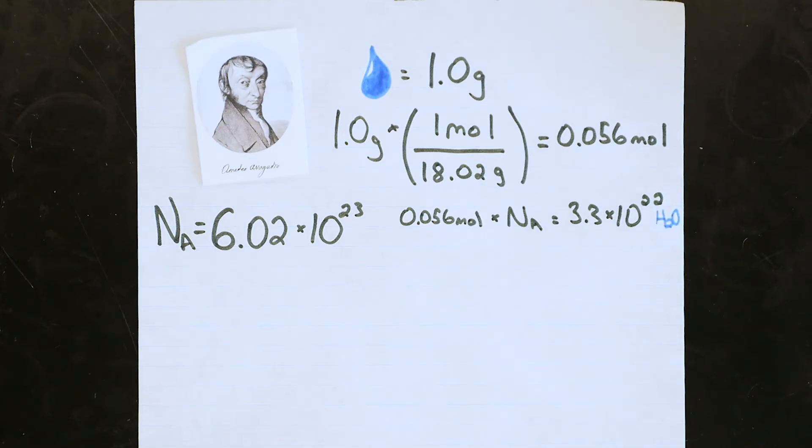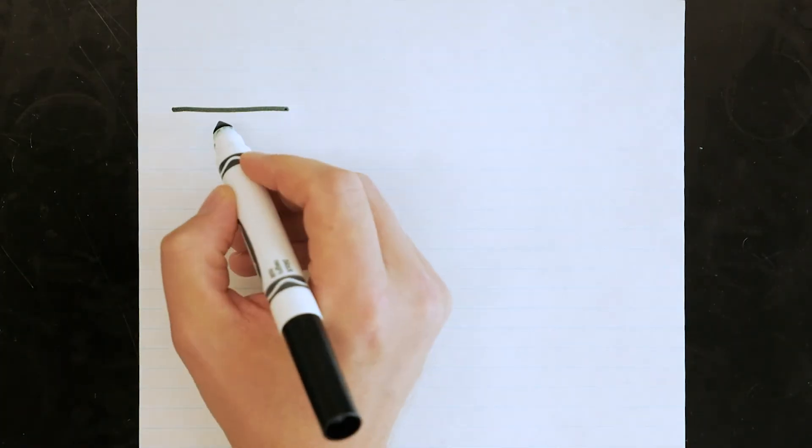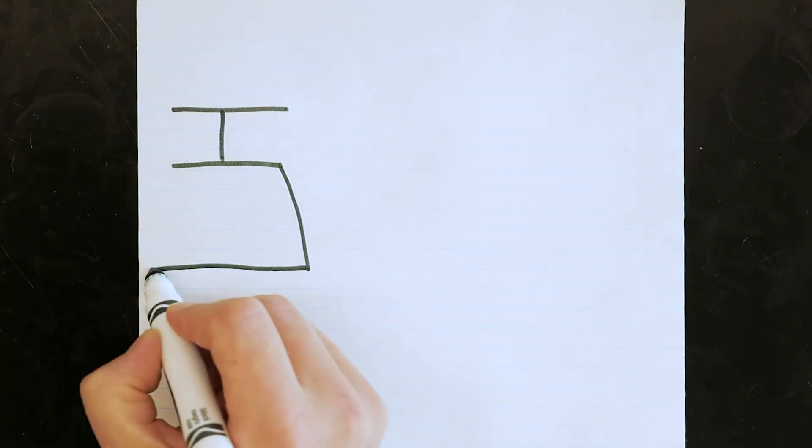So what I need to do with the hydrate is somehow count how many calcium sulfate molecules I have and how many water molecules I have. And then I can work out how many waters are attached to each calcium sulfate on average. The only problem is that the water is actually attached to the calcium sulfate, so here's what we'll have to do.